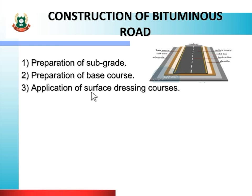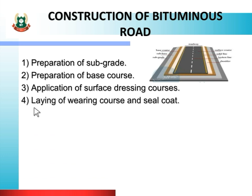Next step is application of surface tracing course. In this step, tack coat is sprayed on the base course, coarse aggregate is sprayed on this base course, and compacted with a roller. Then hot bitumen is sprayed over this layer of coarse aggregate and compacted by roller for the design camber. Last step is laying of wearing course and seal coat — the final layer of bituminous mix is applied, followed by necessary compaction as per camber and gradient of road.